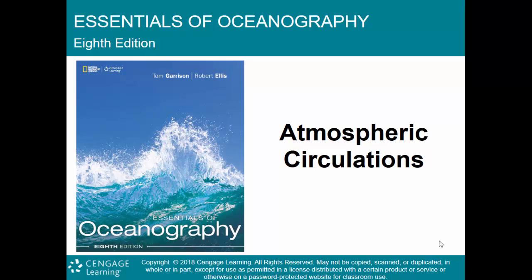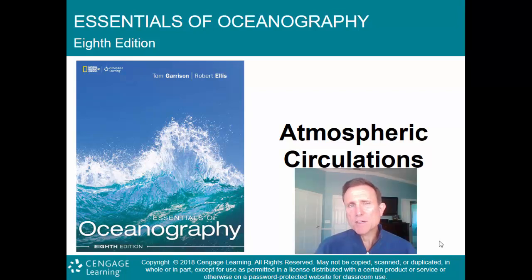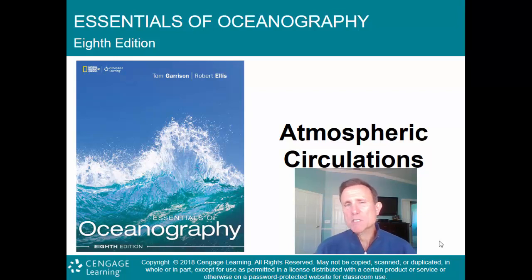Welcome back to an introduction to oceanography from the textbook Essentials of Oceanography, 8th edition, brought to you by Cengage Learning, written by Tom Garrison and Robert Ellis. We've talked about ocean structures, now let's talk about the ocean-atmosphere interactions, and we'll start that by discussing atmospheric circulations. How does the atmosphere move? Why does the atmosphere move? And what impact does that have on the ocean?